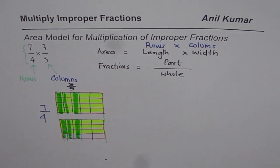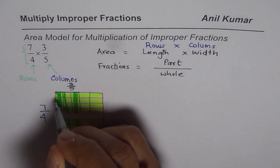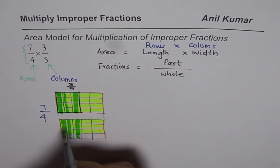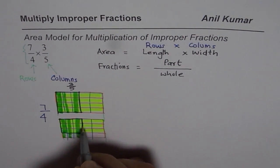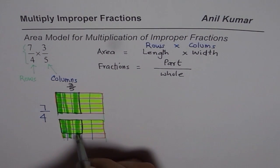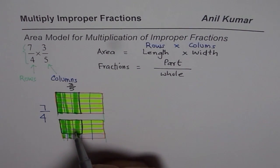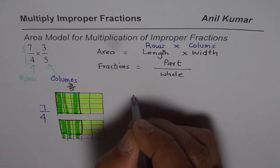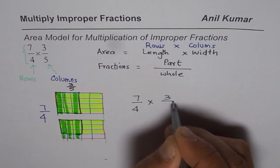But important thing is what is common between the two. So the portion which is common is the product. So this is common. Here we have that portion as common. And here we have this portion as common. So at times what we do is we only shade up to the common portion. So this represents area and therefore this is equal to 7 over 4 times 3 over 5.